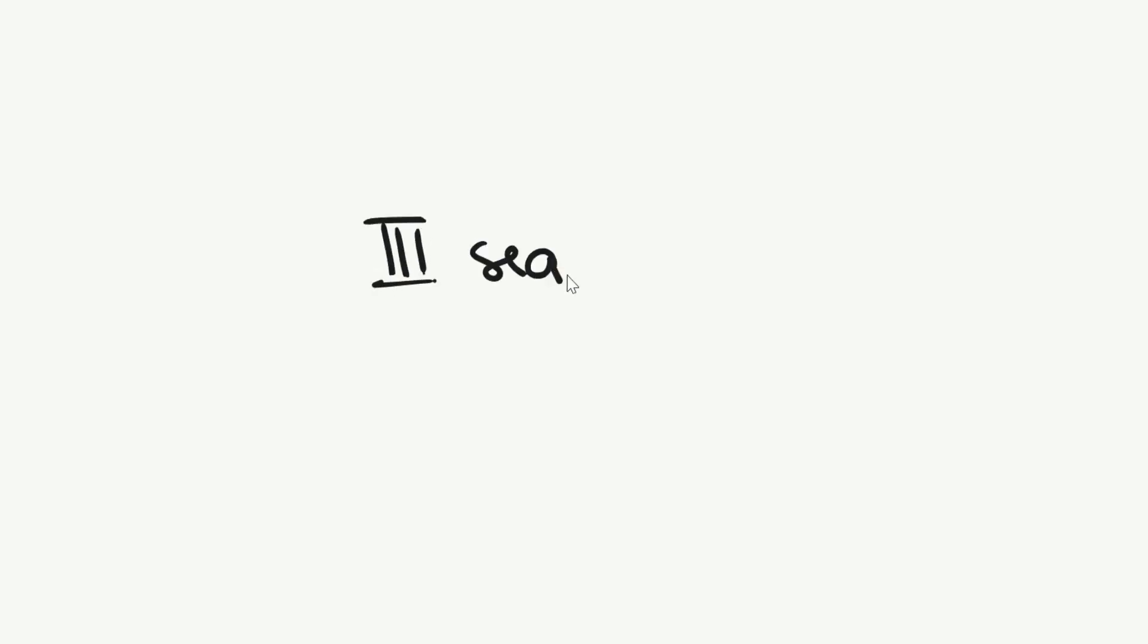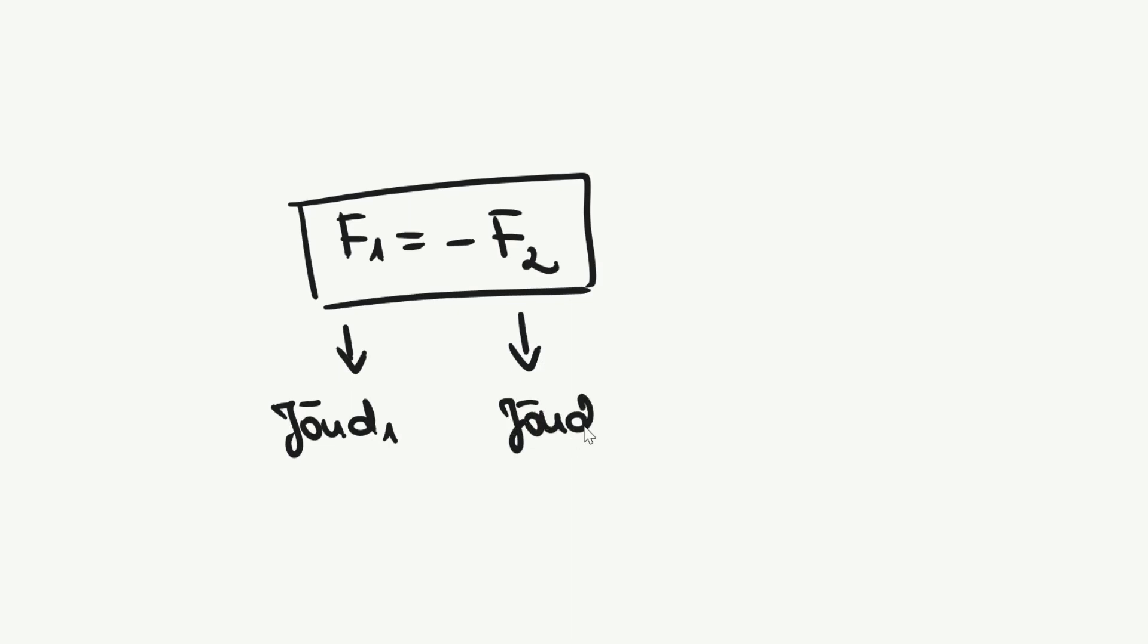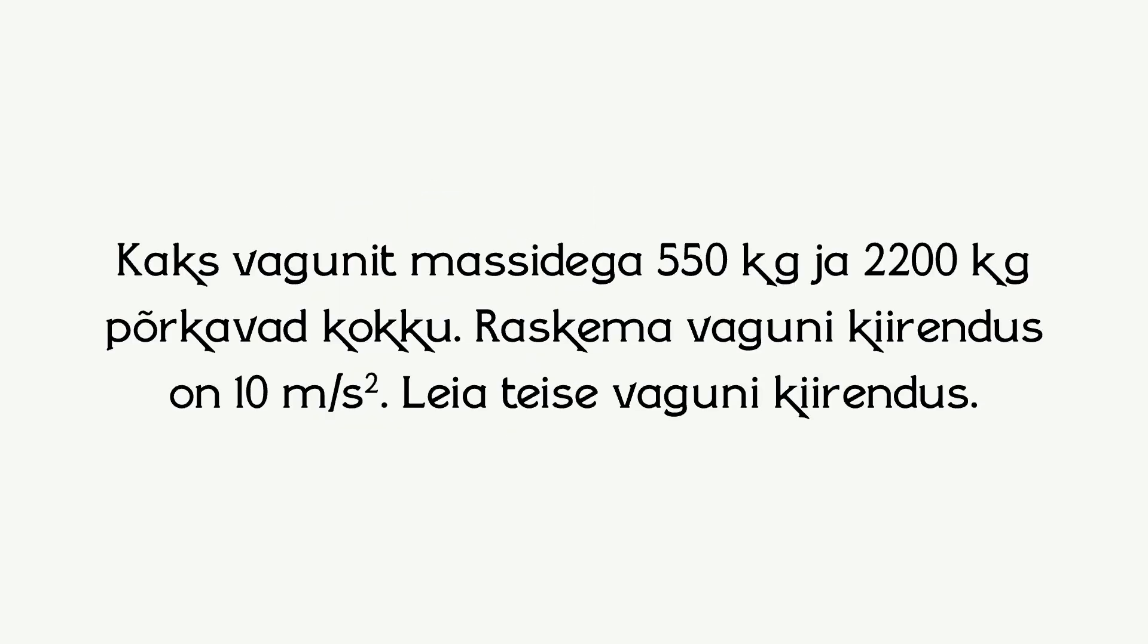Newtoni kolmas seadus on mõju ja vastumõju seadus. Seadus ütleb, et kaks keha mõjutavad teineteist jõududega, mis on suuruselt võrdsed ja vastassuunalised. Vastastikumõjus olevale kehale mõjuvaid jõude saab eristada indeksitega 1 ja 2. Kinnistamiseks lahendame kolmanda seaduse kohta ühe ülesande. Kaks vagunti massidega 550 kg ja 2200 kg põrkuvad kokku. Raskema vaguni kiirendus on 10 meetrit sekund ruudus. Leia teise vaguni kiirendus.